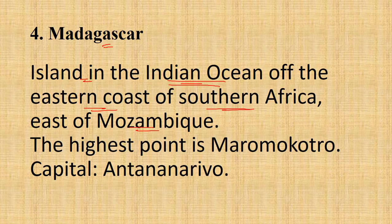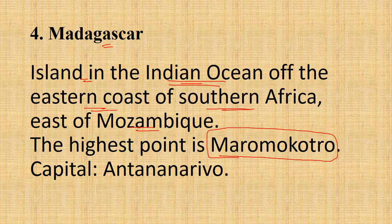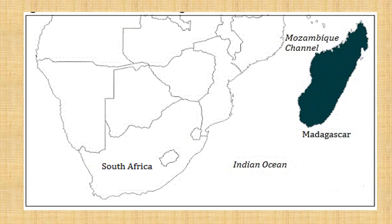Madagascar lies east of Mozambique. Its highest point is known as Maromokotro. Its capital is Antananarivo. Remember to divide the capital name into parts: Antanana and Rivo.